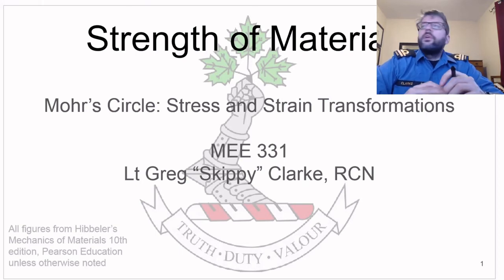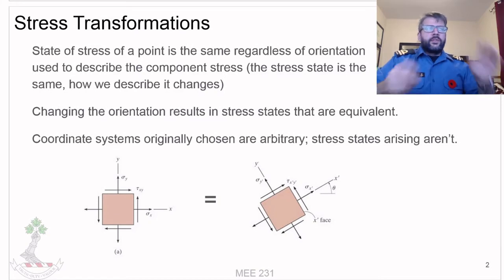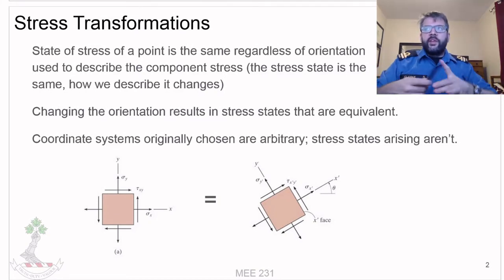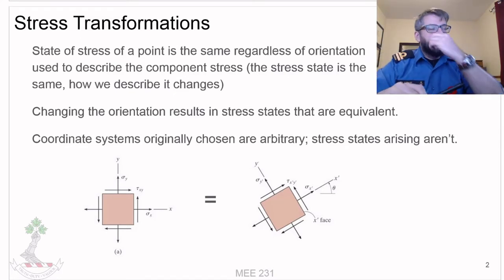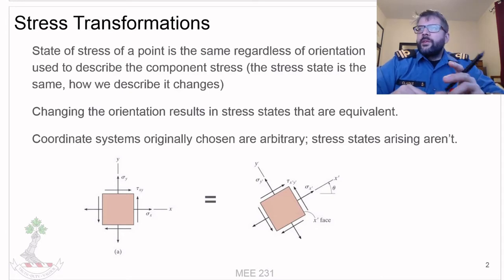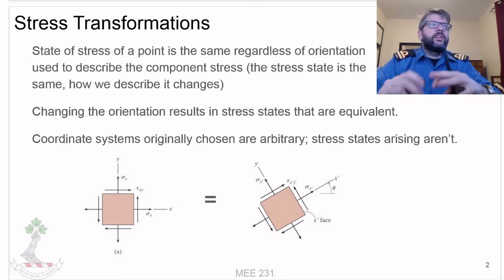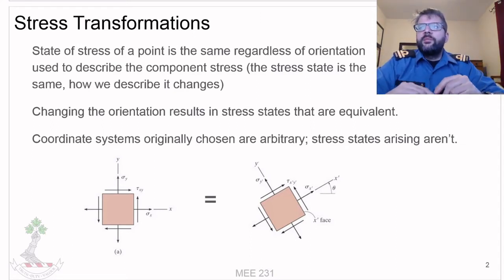Let's look at Mohr's Circle, which we use for stress and strain transformations. The basic premise is that the state of stress at a point is the same regardless of how you look at it. The coordinate system you choose is going to affect how you describe that state of stress, but changing the orientation results in different stress states that are equivalent to one another.